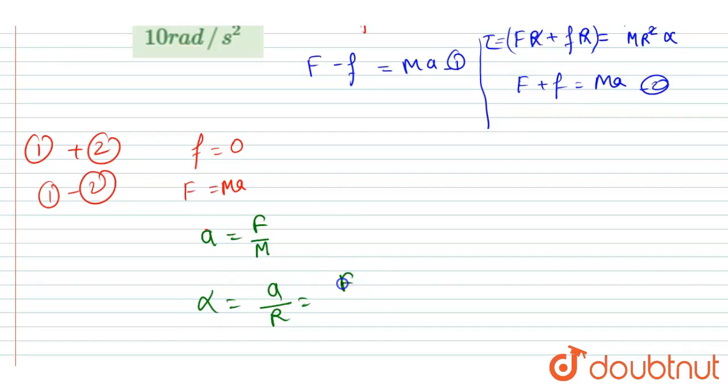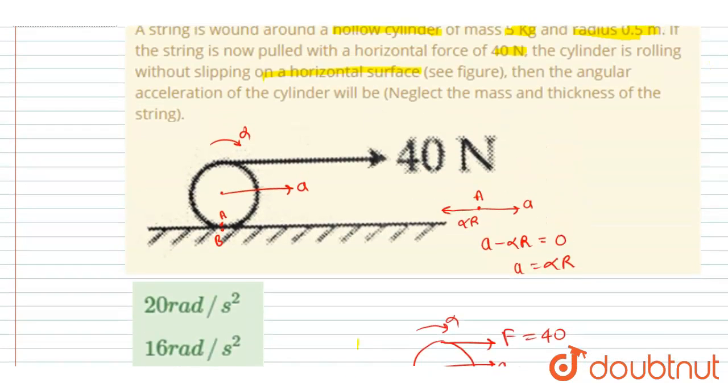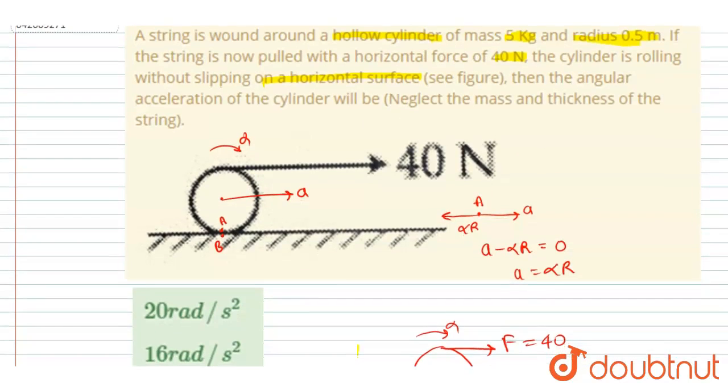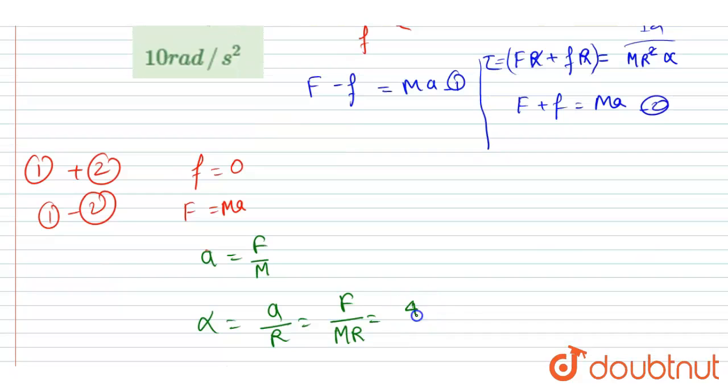So it will be F by mr. Just put the values now. F is 40 newton, m is 5 kg, and radius is 0.5. Just put the value - 40, 5 kg, and radius is 5 by 10.